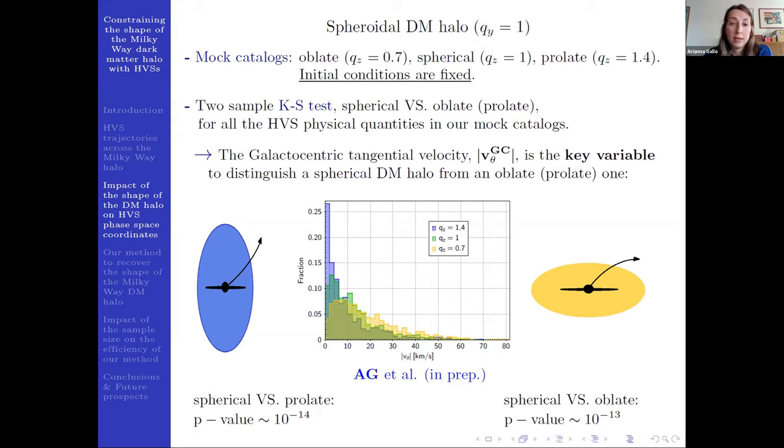And we find that only the galactocentric tangential velocity enables us to distinguish a spherical from a prolate or a spherical from an oblate dark matter halo with a high significance level.